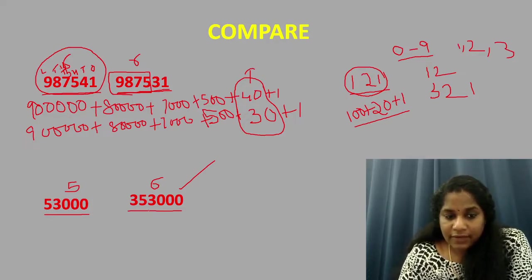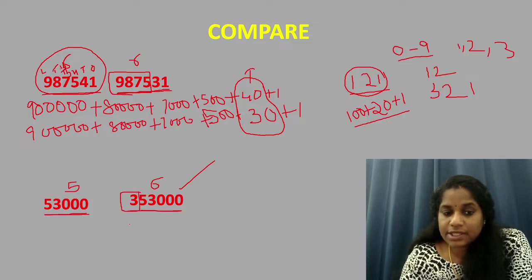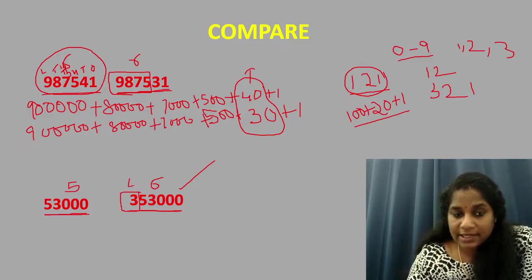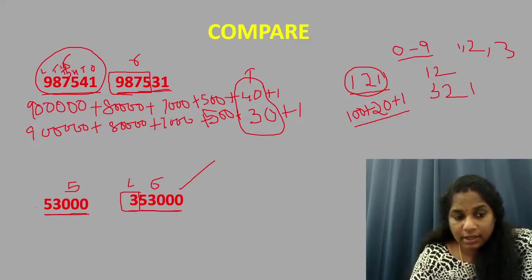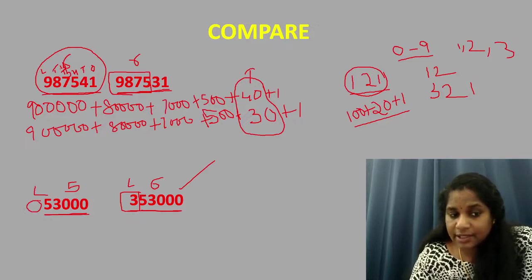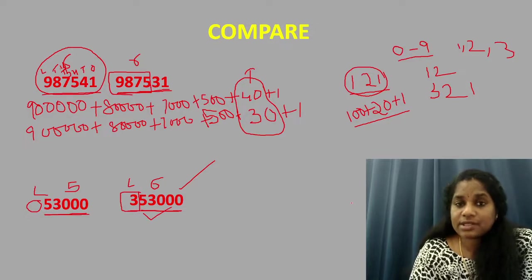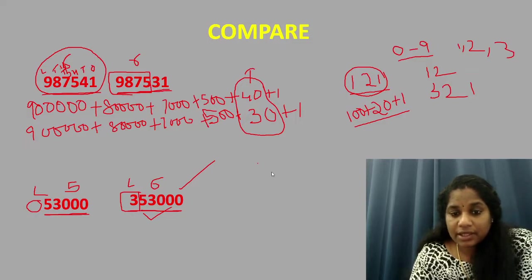This when we see from the right hand side these five digits are same. Sixth position there is a number which is 3. So this position is lakhs place. At lakhs place there is a digit 3. Here at lakhs place what is there? It is 0. So which is greater? 3 lakhs is greater or 0 is greater? 3 lakhs is greater. So that's how this number becomes a greater number. I hope this thing is clear.